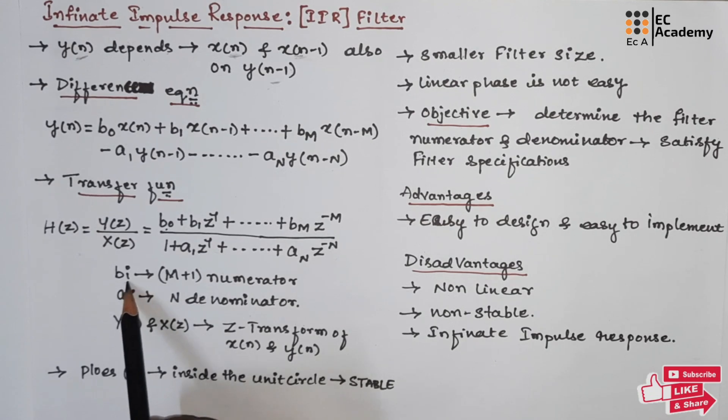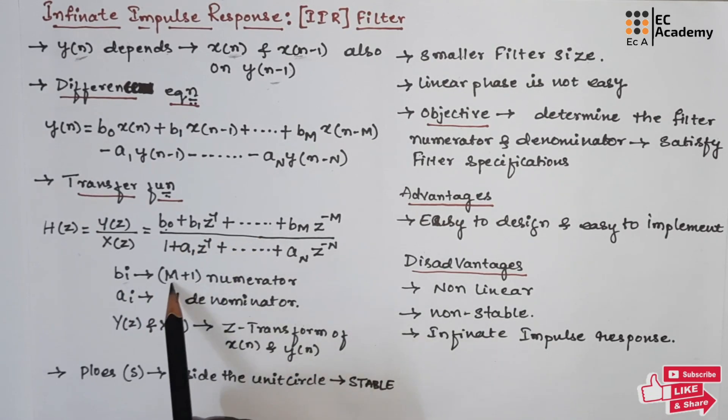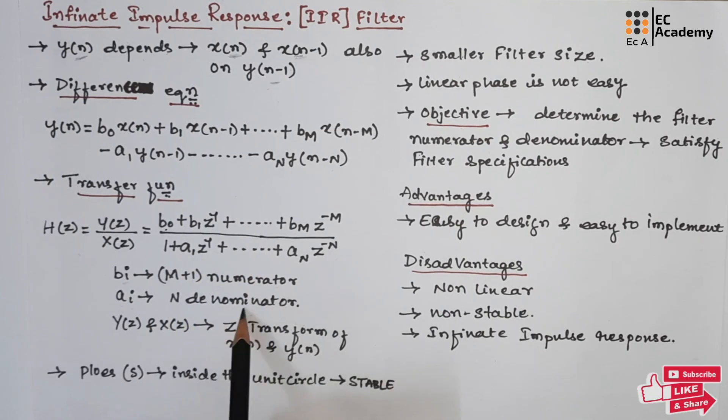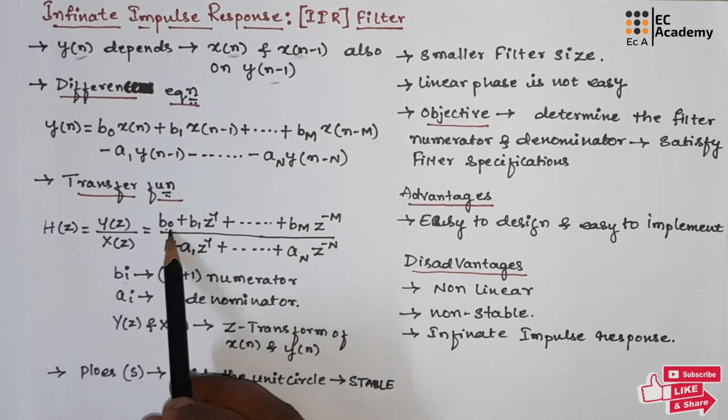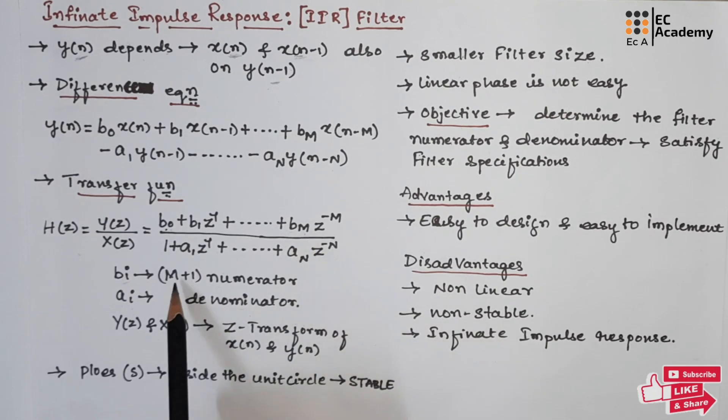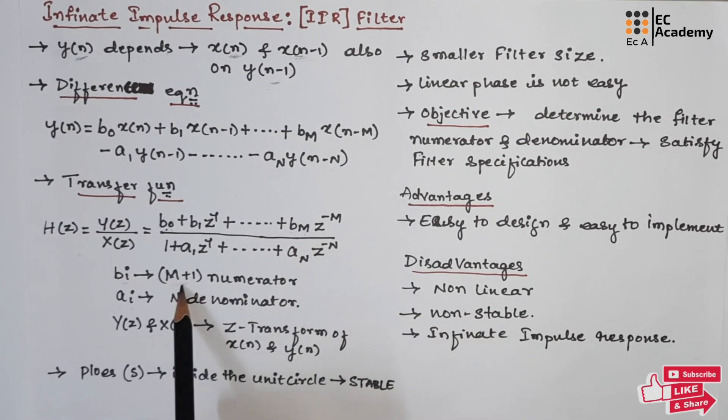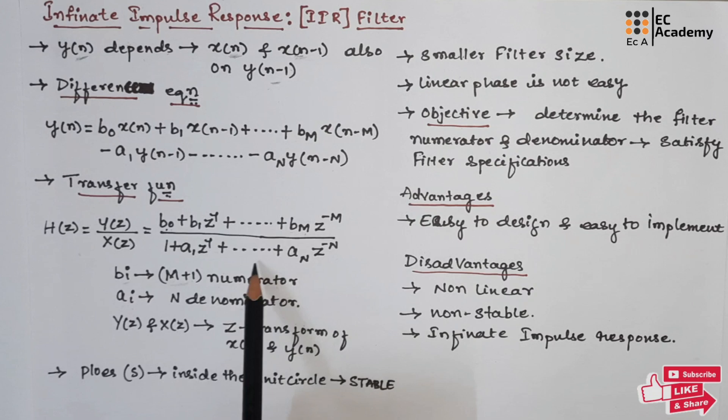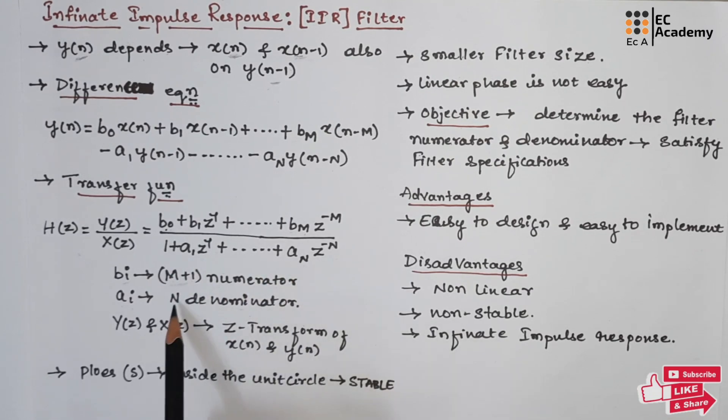Here bi will be m plus 1 numerator and ai will be n denominator. If you observe the numerator it is from 0 to m, which is nothing but m plus 1 numerator. In the denominator we are having from 1 to n, so it will be n denominator.